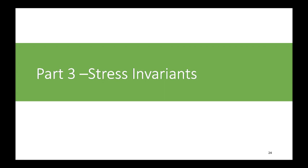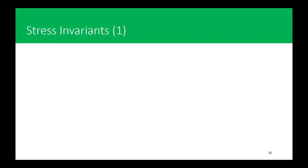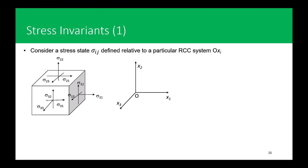Now you understand what tensors are and the tensor notations we will use in this course. Let's move to the next part: stress invariants. Consider a stress state Σ_ij defined relative to a particular rectangular Cartesian coordinate system O X_i where i varies from 1 to 3, giving axes X1, X2, and X3. For an infinitesimal material element, the stress tensor is defined by nine components.